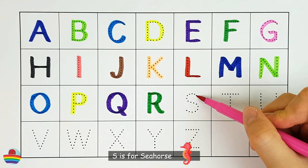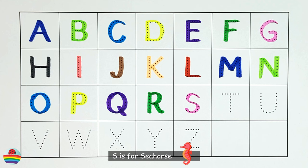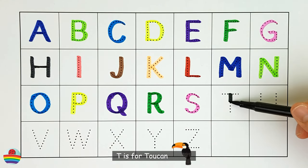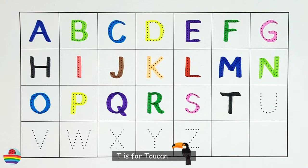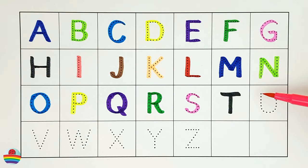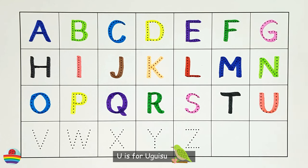S. S is for Seahorse. S. T. T is for Toucan. T. U. U is for Uguisu. U.